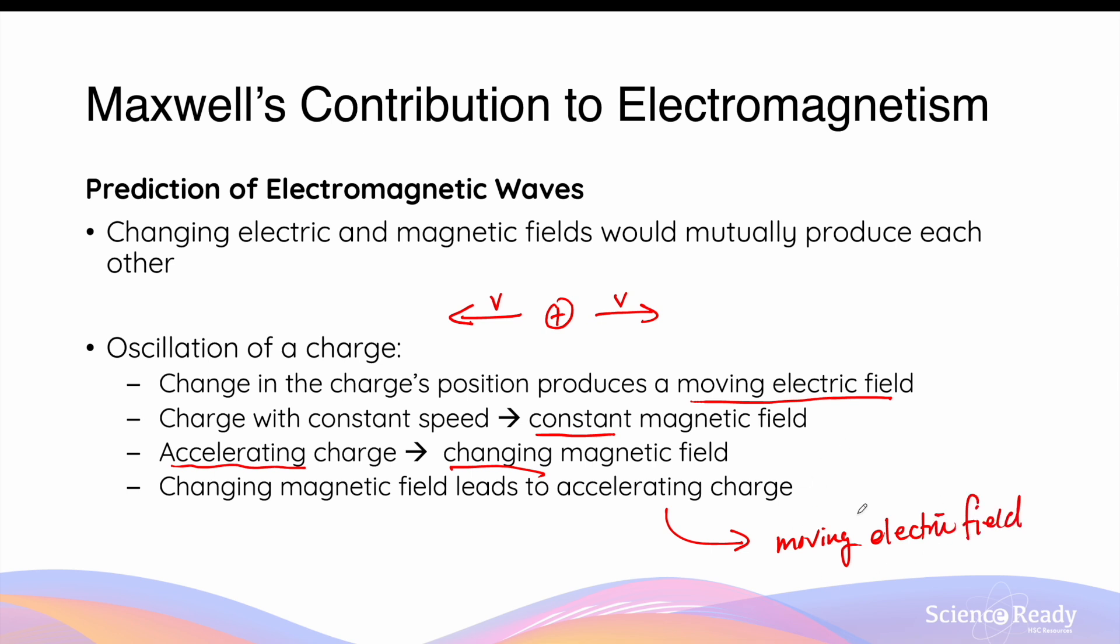Hopefully, what you can see by now is that when we have a charge that oscillates back and forth with acceleration, it will be able to produce not only a changing electric field, but also a changing magnetic field. And these two fields, when they are changing, they are able to produce one another.